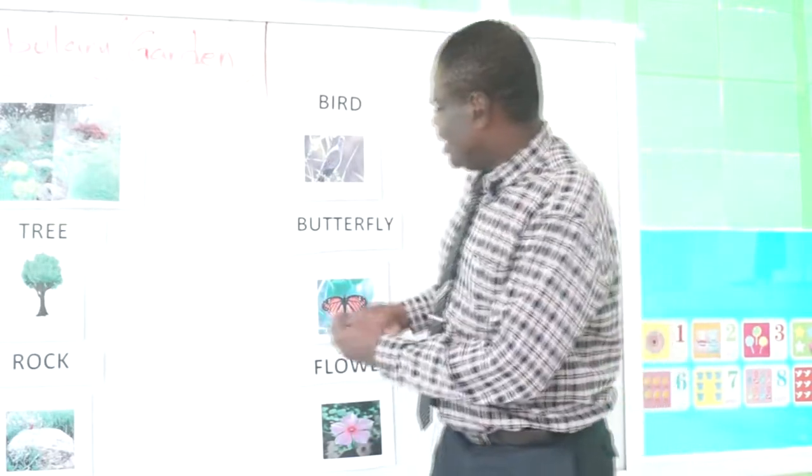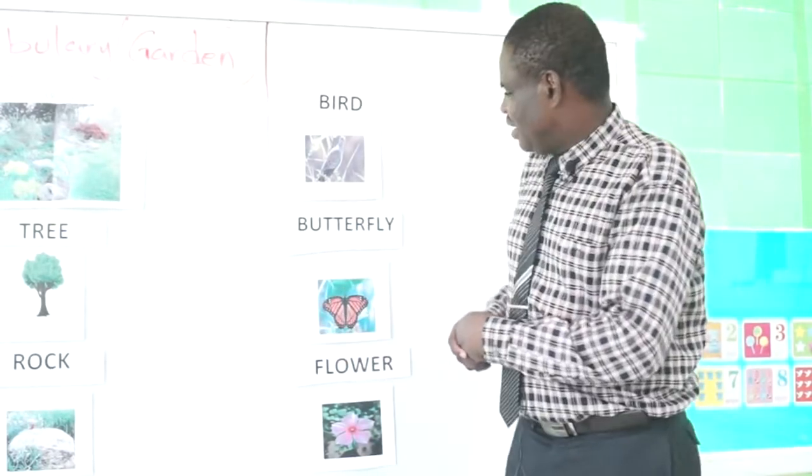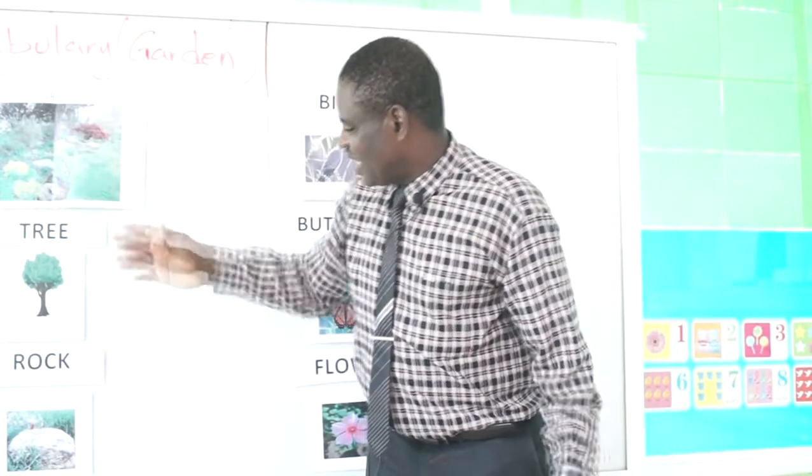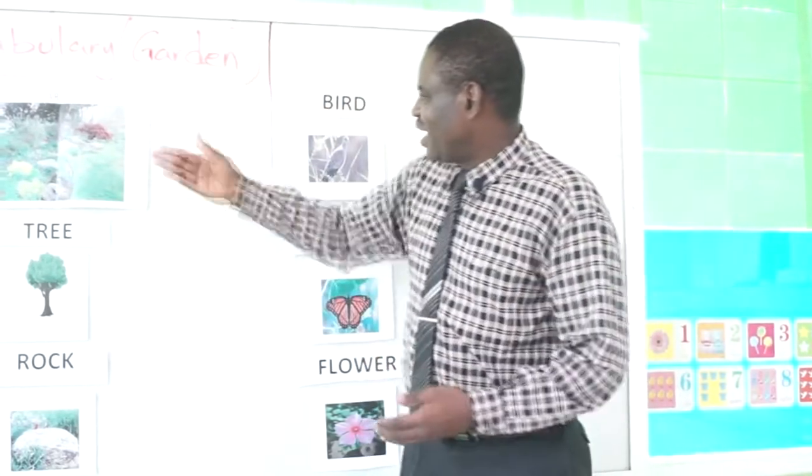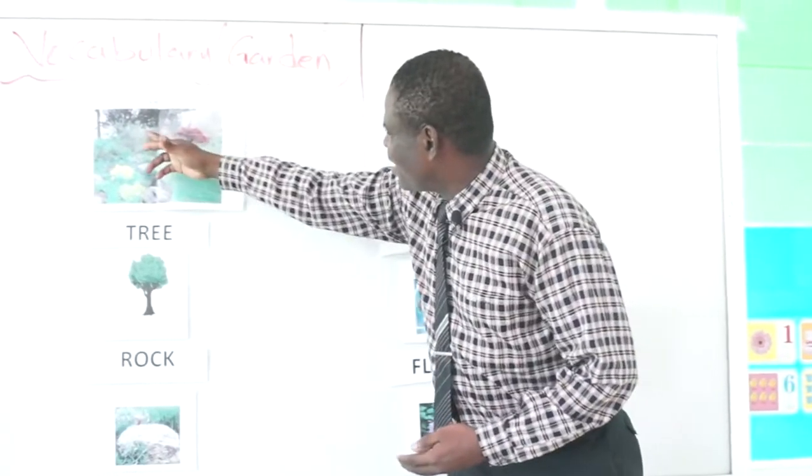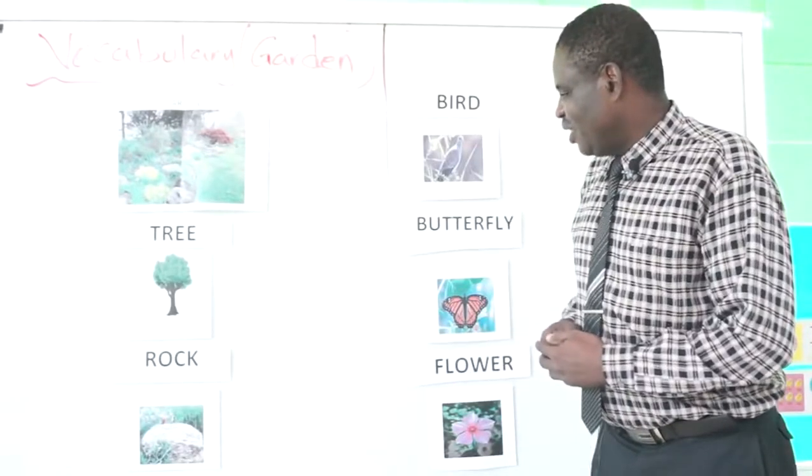Now we can see rock just as we said. This is a small garden. If you talk about tree, we can also find a lot of trees around.